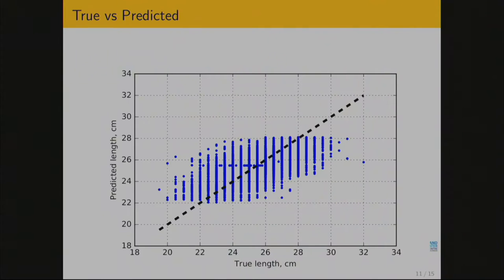For results, I plot the length of the fish. On the X-axis you can see fish from around 20 to 30 centimeters, and my model predicts fish from 22 to 28 centimeters. On average, it gives the correct value. For extremes — too small or too large — they won't be predicted correctly. This reflects the 50% R-squared shown on this graph.